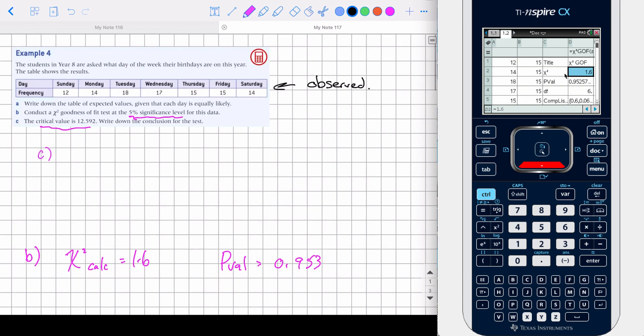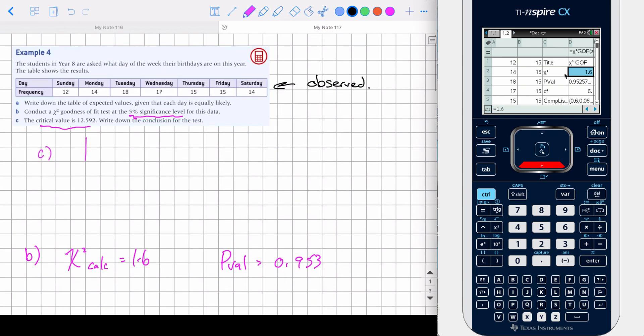So part C, what we're going to need is I'm going to draw the chi-squared distribution, or a representation. So it's going to have something like this, and this is going to be our chi-squared. In the question, it gave us the critical value. The critical value is 12.592, or the 5% significance says this area is 0.05. So we've got two ways to go at this.